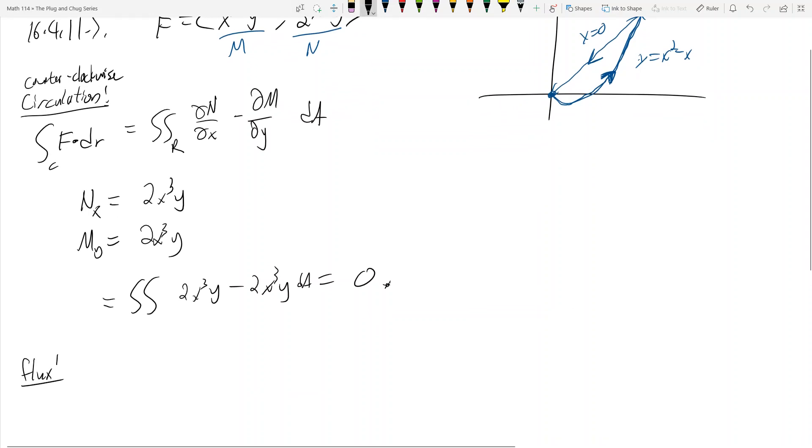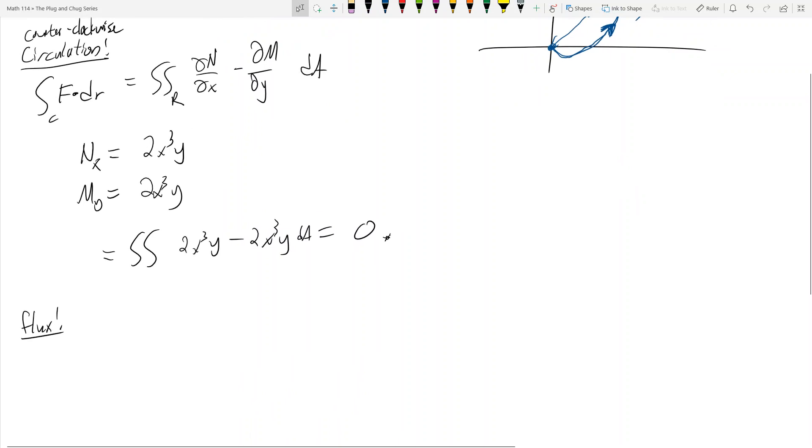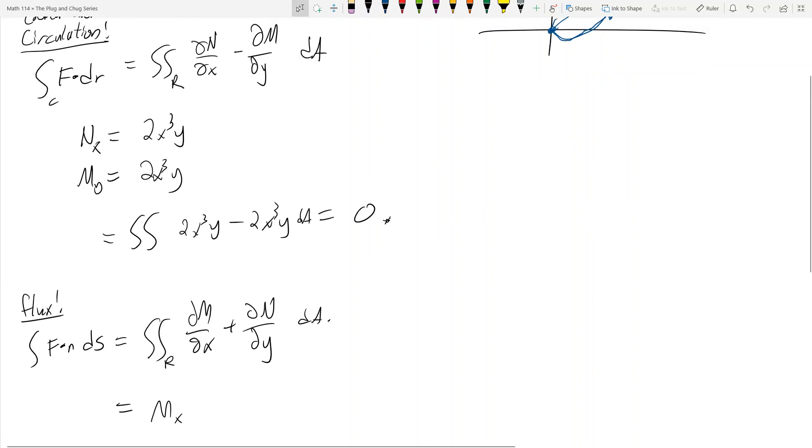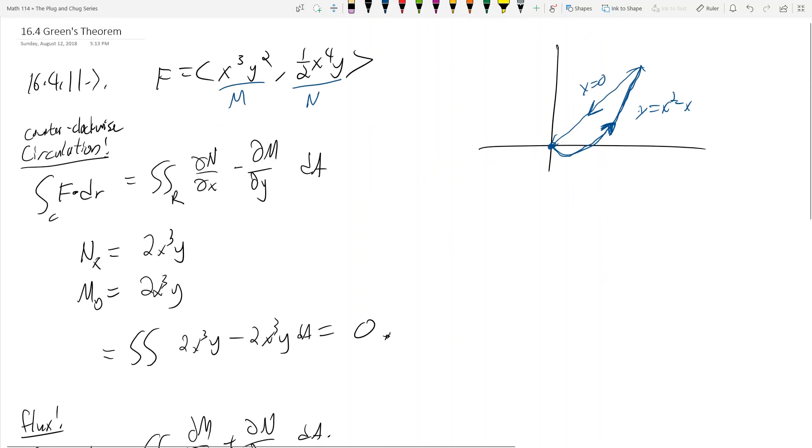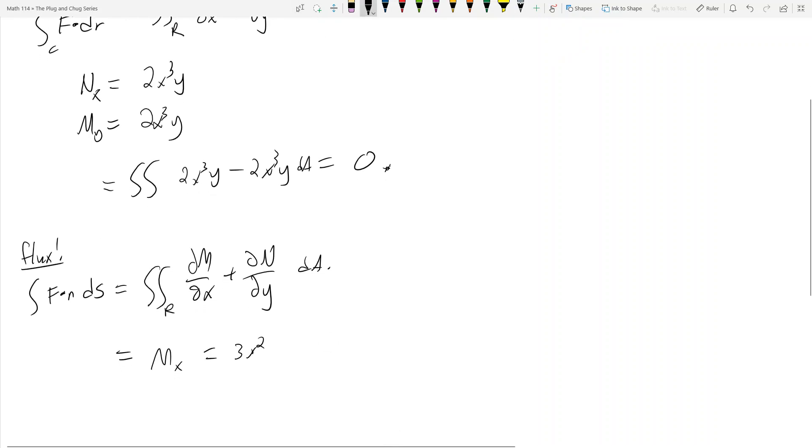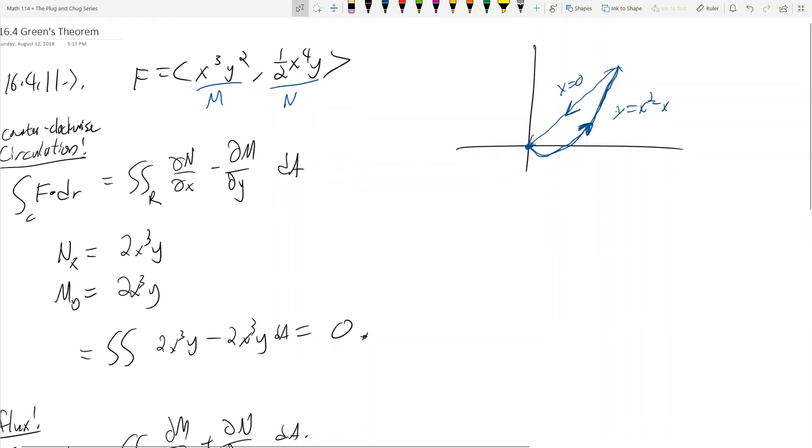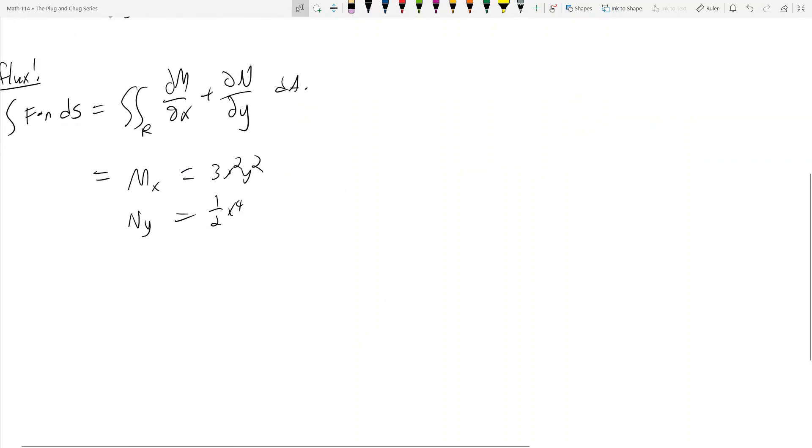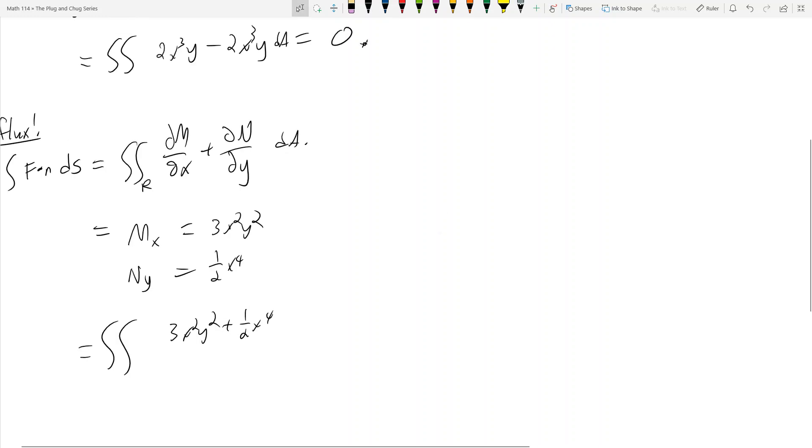Now let's talk about flux. We haven't really had to talk about flux integrals up to now, but a flux integral is usually F dot n dS. In our case, Green's theorem says that the flux integral will be the double integral over R of dM/dx plus dN/dy dA. What is M sub x? Take M and take a partial respect to x, and that gets me 3x²y². And what's N sub y? That's this guy, partial respect to y, and that's going to be one half x⁴.